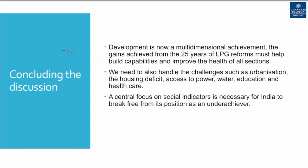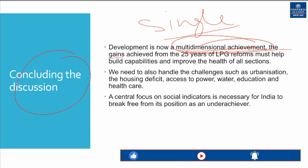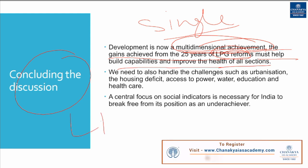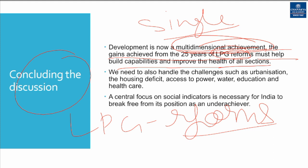Concluding the discussion, development is a multi-dimensional achievement — it doesn't rely on a single sector; you have to work on various fronts. The gains from 25 years of LPG reforms must help build capabilities and improve the health of all sections. We need to improve the manufacturing sector, the agriculture sector — which employs more than 50% of the population — and handle challenges such as urbanization, housing deficit, and access to power, water, education, and healthcare.